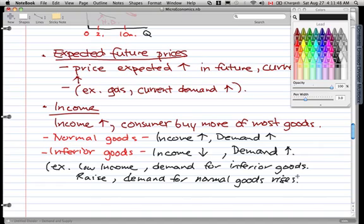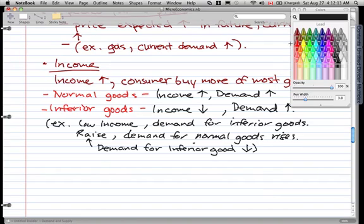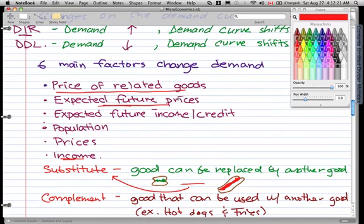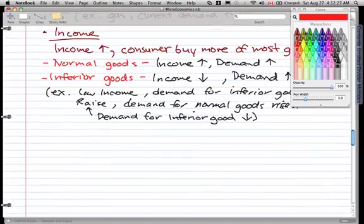When this happens, it is normal to think that our demand for inferior goods decreases. Makes sense—we could buy normal goods now, so why would we buy inferior goods? Our demand for inferior goods would decrease. That's how income affects the demand curve.